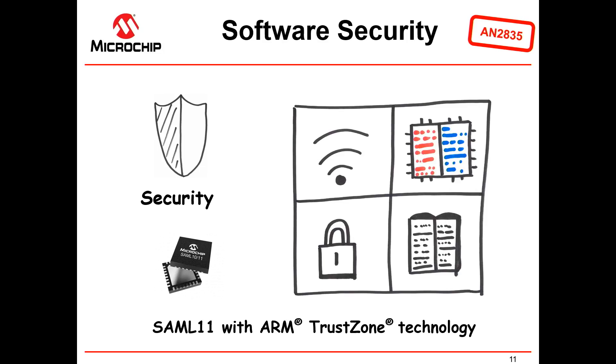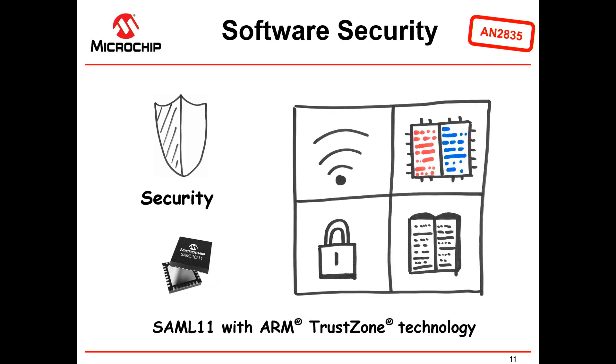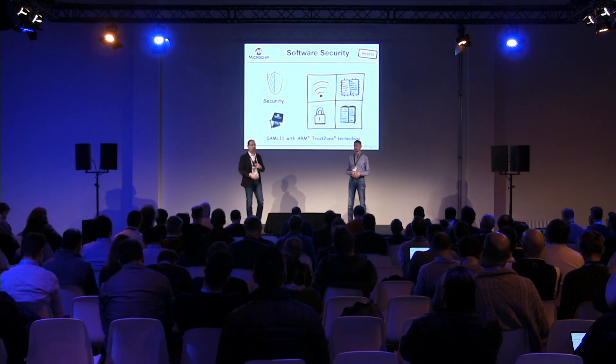TrustZone is found in the latest Cortex M23 devices from ARM. The SAM L11 from Microchip was actually the first Cortex device on the market offering the M23 core, with TrustZone technology built in. There's an app note — AN2835 — a practical explanation of how you can use TrustZone in simple IoT applications.